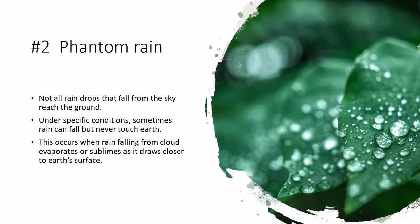Not all raindrops that fall from the sky reach the ground. Under specific conditions, sometimes rain can fall but never touch earth. This is called phantom rain. This occurs when rain falling from a cloud evaporates or sublimes as it draws closer to earth's surface.